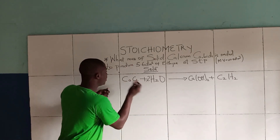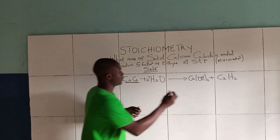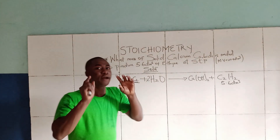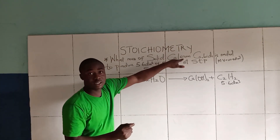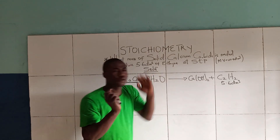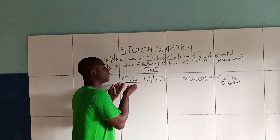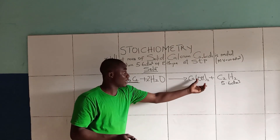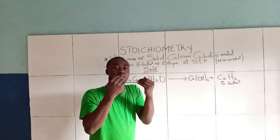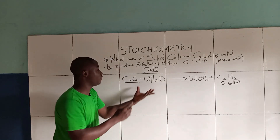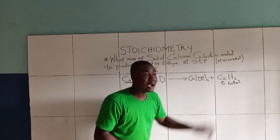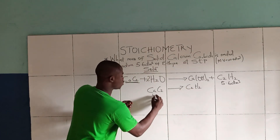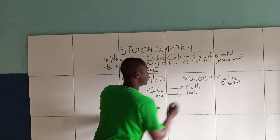Now they are asking us what mass of solid calcium carbide is required to produce 5.6 dm³ of acetylene. From the balanced reaction, we only need to focus on calcium carbide and acetylene — we have no business with water and calcium hydroxide except for balancing purposes. From the balanced equation we can see it is a 1:1 molar ratio — one mole of calcium carbide to one mole of acetylene.